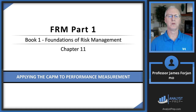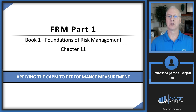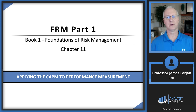This is FRM Part 1, Book 1, Foundations of Risk Management, and this is Chapter 11: Applying the Capital Asset Pricing Model to Performance Measurement. We're going to build on what we did back in Chapter 10. The Capital Asset Pricing Model formula included input variables such as the risk-free rate of interest, the expected return on the market portfolio, and the level of systematic risk, which we called beta. Those input variables are going to be critical in this chapter as we apply them to some performance measures.